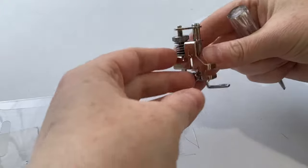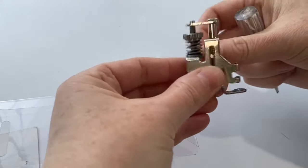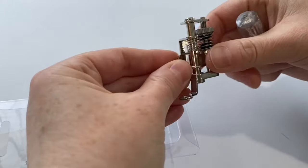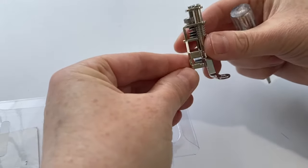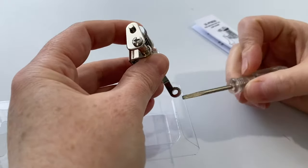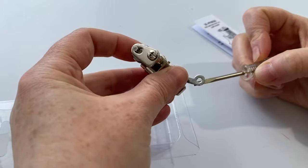So this is the main adapter that attaches to your shank and this foot right here is actually the free motion quilting foot.